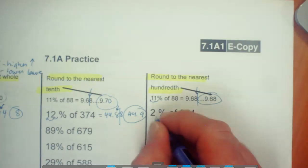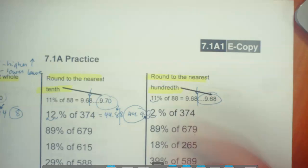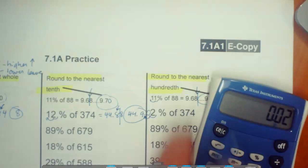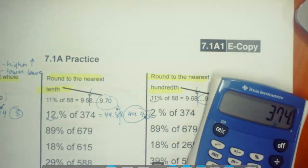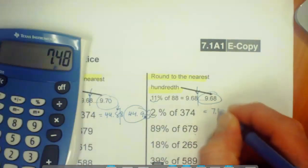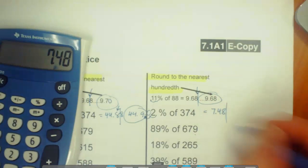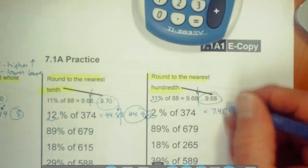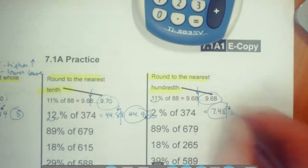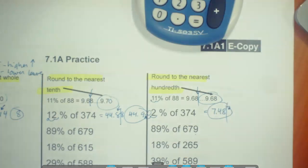All right. So 2%, tough one. Don't forget the placeholder. It's 0.02. We're going to multiply that times 374, and we're getting 7.48. Again, we're looking at the hundredths column, which is right here. We're rounding to the nearest hundredth, which is the 8. We look behind it. Is there anything there? No, so it just stays at 7.48. Sometimes you don't have to change them, other times they would.